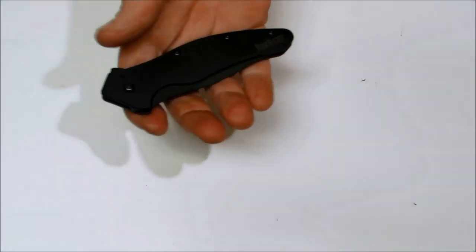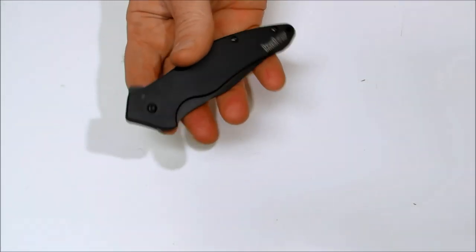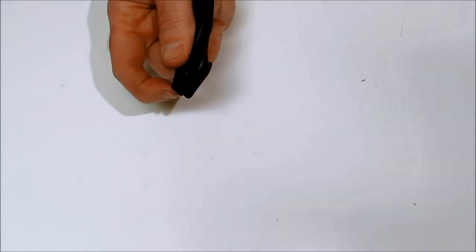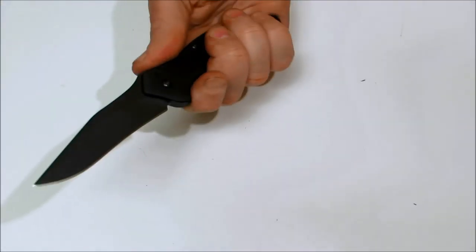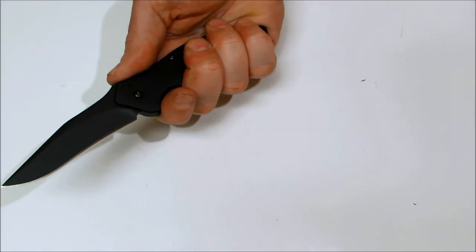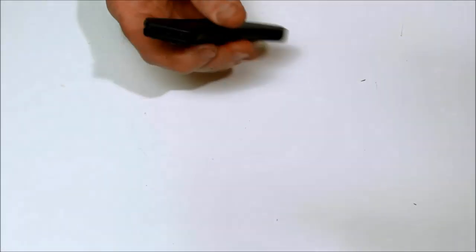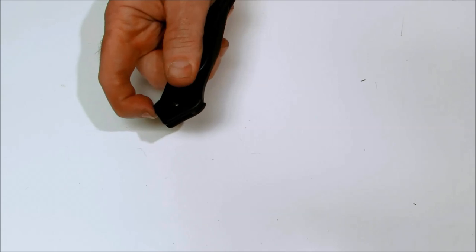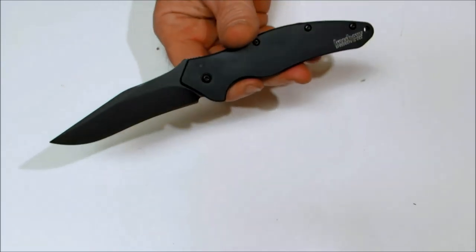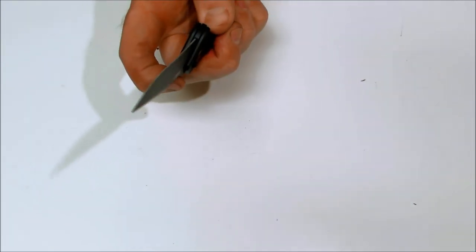The shallot is the largest of the Ken Onion series. It features a 3.5 inch blade of 14C28N stainless steel and it also has Kershaw's famous speed safe assisted opening technology which opens the knife in a blink of an eye spring assist.